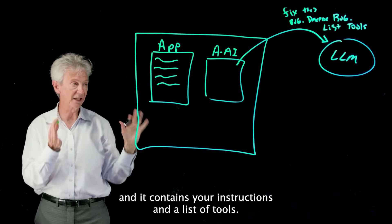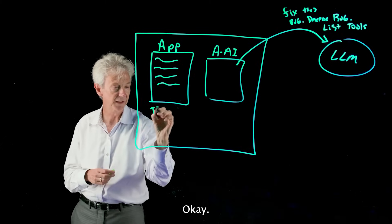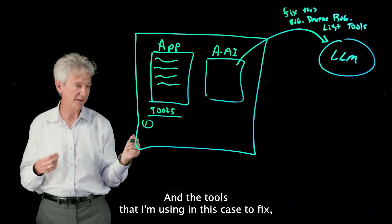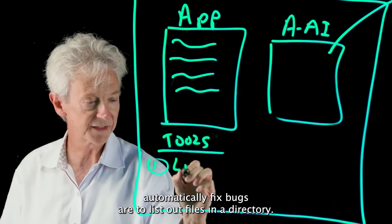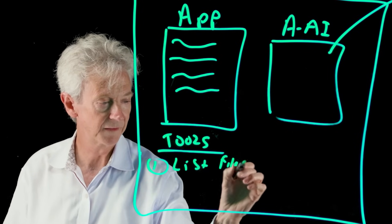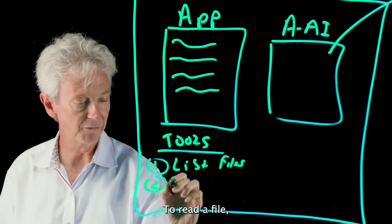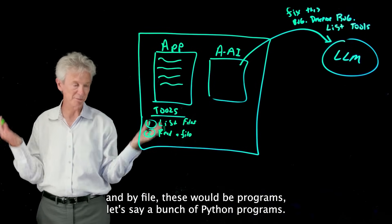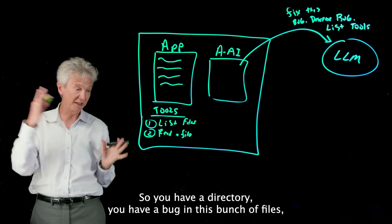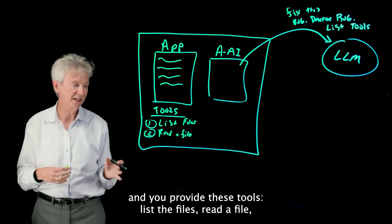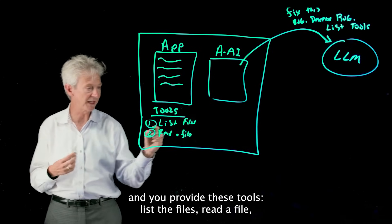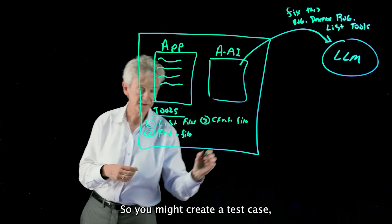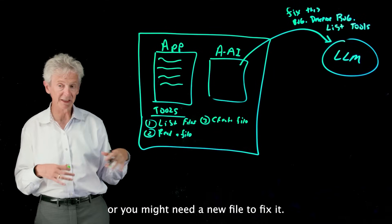In your system you have this initial prompt which you send to the LLM and it contains your instructions and a list of tools. The tools that I'm using in this case to automatically fix bugs are to list out files in a directory, to read a file - and by file these would be programs, let's say a bunch of Python programs. So you have a directory, you have a bug in this bunch of files, and you provide these tools: list the files, read a file, create a new file - so you might create a test case or you might need a new file to fix it.